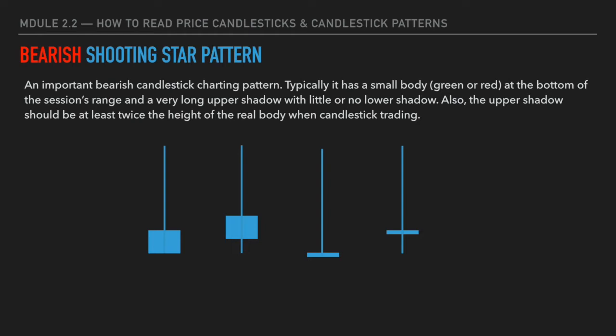If we talk about the bullish hammer pattern, then we should also talk about its opposite: the bearish shooting star pattern. A bearish shooting star pattern typically has a small real body at the bottom of the bar and a very long upper shadow with very small or even no lower shadow. Generally, the upper shadow should be at least twice the height of the real body. The bars can be either green or red. It shows two important signs: first, the potential exhaustion of the buying power; and second, that the selling pressure overtook the buying power.